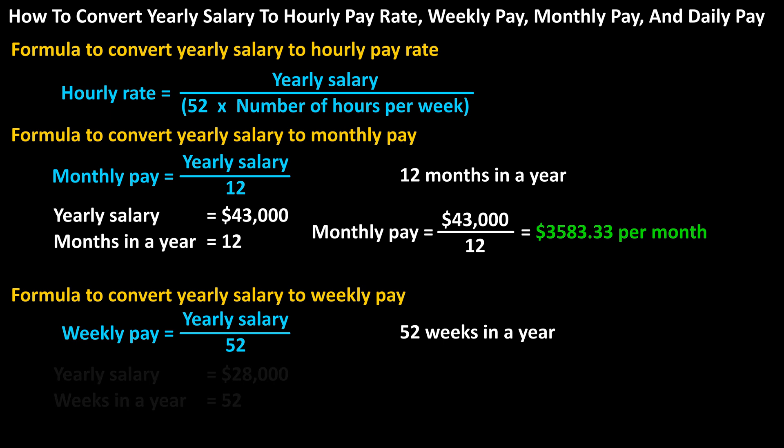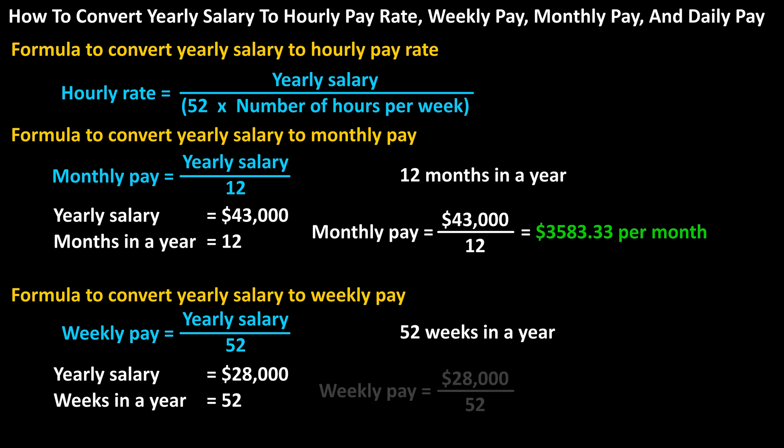As an example, if someone makes $28,000 a year, how much do they make per week? The formula would be: weekly pay equals $28,000 divided by 52, which calculates to $538.46 rounded off.